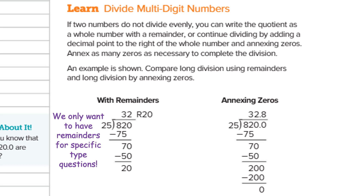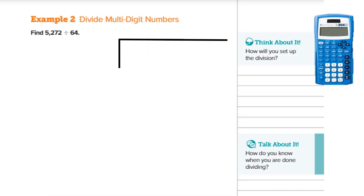In sixth grade, we're going to do what's called annexing the zeros. When we get a remainder, we don't want to stop. We want to add a decimal at the end of our whole number, raise it up, and then put in a zero. There are times where we have to put in a zero, and another zero, and another zero — it might take us a while to get to the final end. But each time I put in a zero, I bring it down, and that allows me to continue dividing.